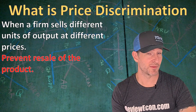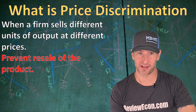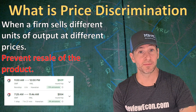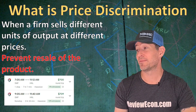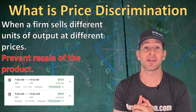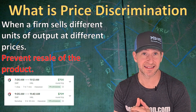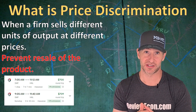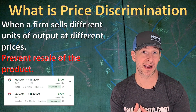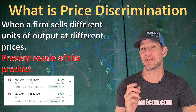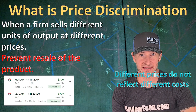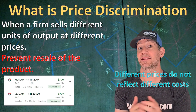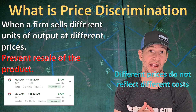One of the businesses notorious for price discriminating is the airline industry. If you buy a ticket to Hawaii well in advance, you will pay one price, but if you wait to the last minute, you will pay a much higher price. That's because airlines know that their customers get less sensitive to price changes as the date of the flight approaches. So as the consumers get more price inelastic, they pay higher prices. These different prices charged by the business do not reflect different costs of production — they simply reflect their different customers' willingness to pay for their product.